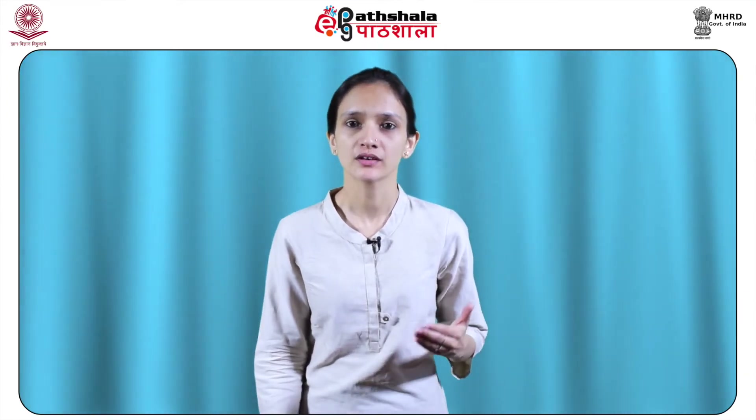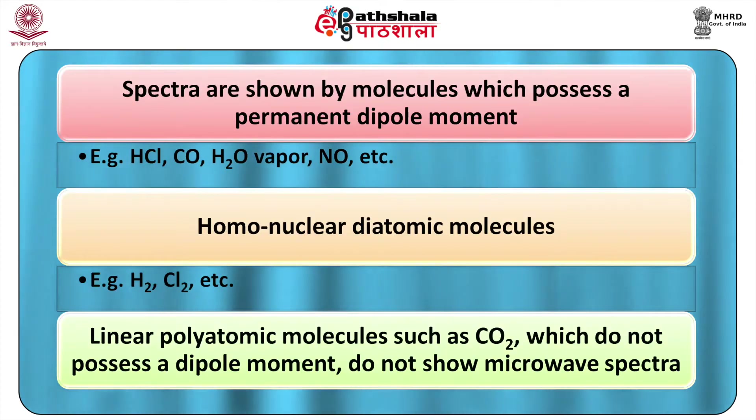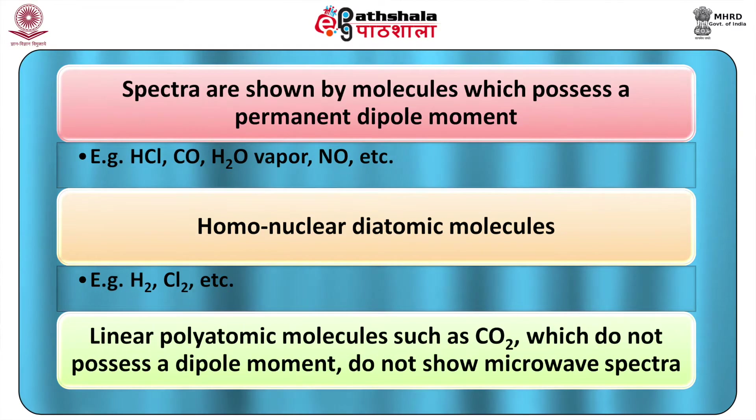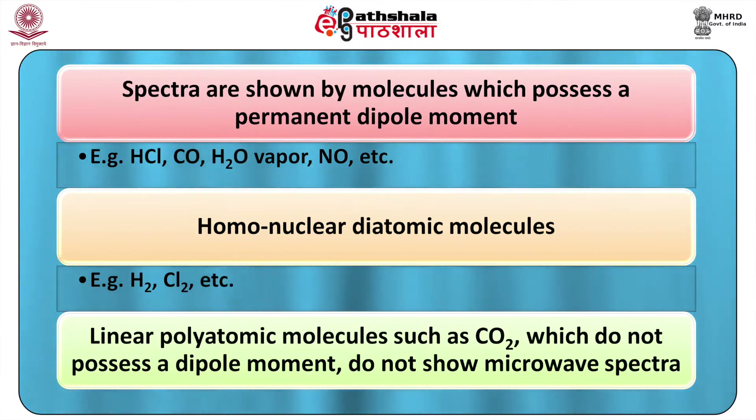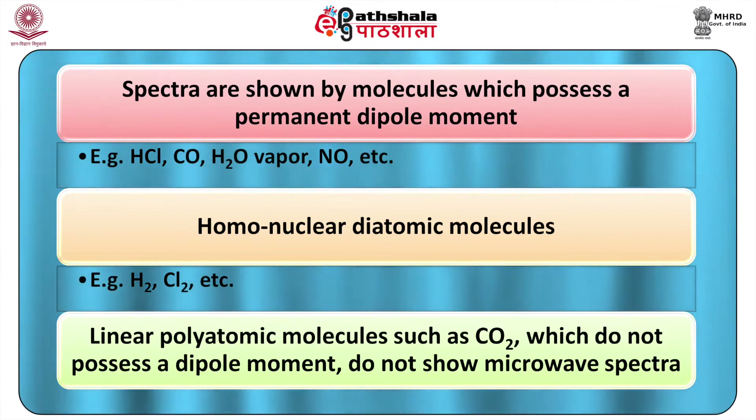In the infrared, visible, and ultraviolet region, an accuracy of the order of 0.001 to 0.005 Angstrom is possible. These spectra result from transitions between the rotational energy levels of a gaseous molecule on the absorption of radiations falling in the microwave region. These spectra are shown by molecules which possess a permanent dipole moment — for example, HCl, CO, H2O vapor, NO, etc.